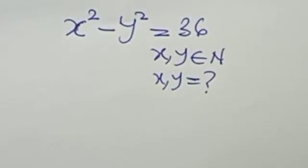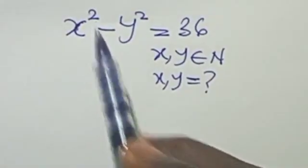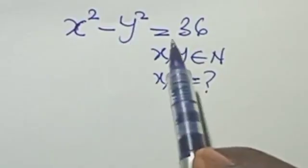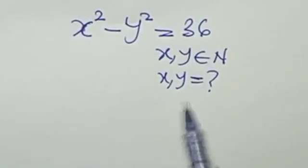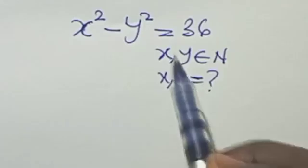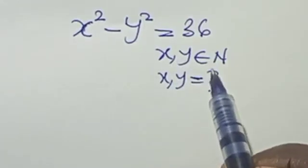Hello everyone, and today we are to solve x² - y² = 36. So we are to find the values of x and y such that x and y is element of natural numbers.